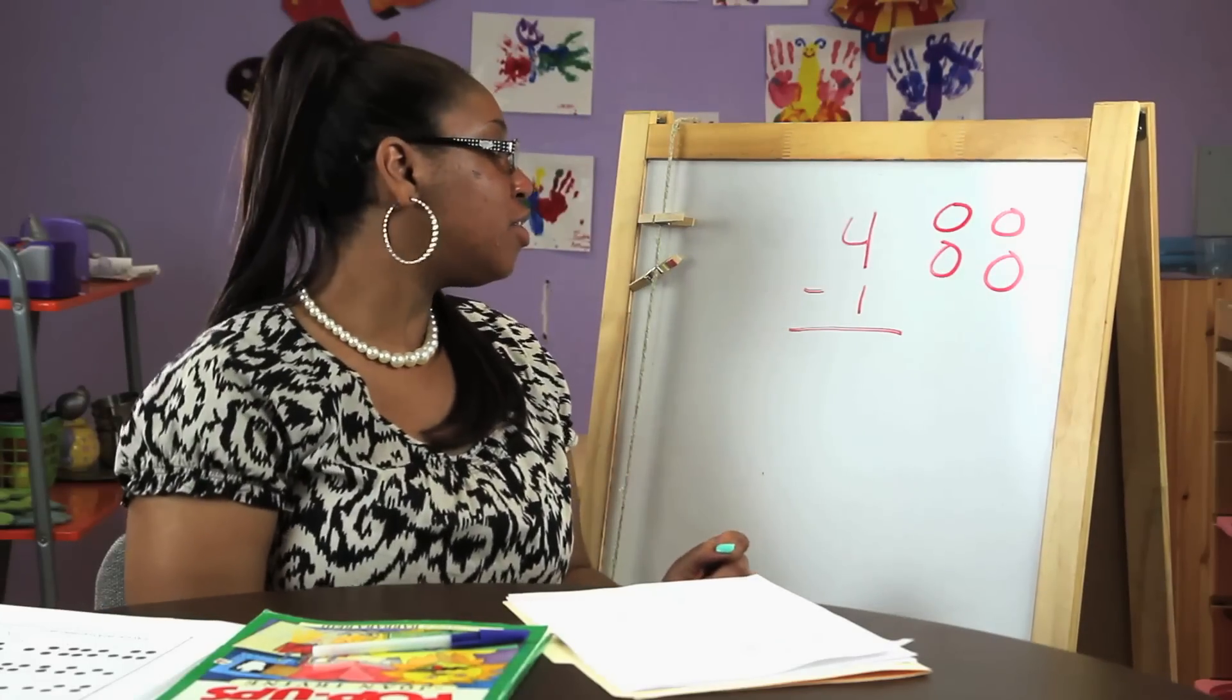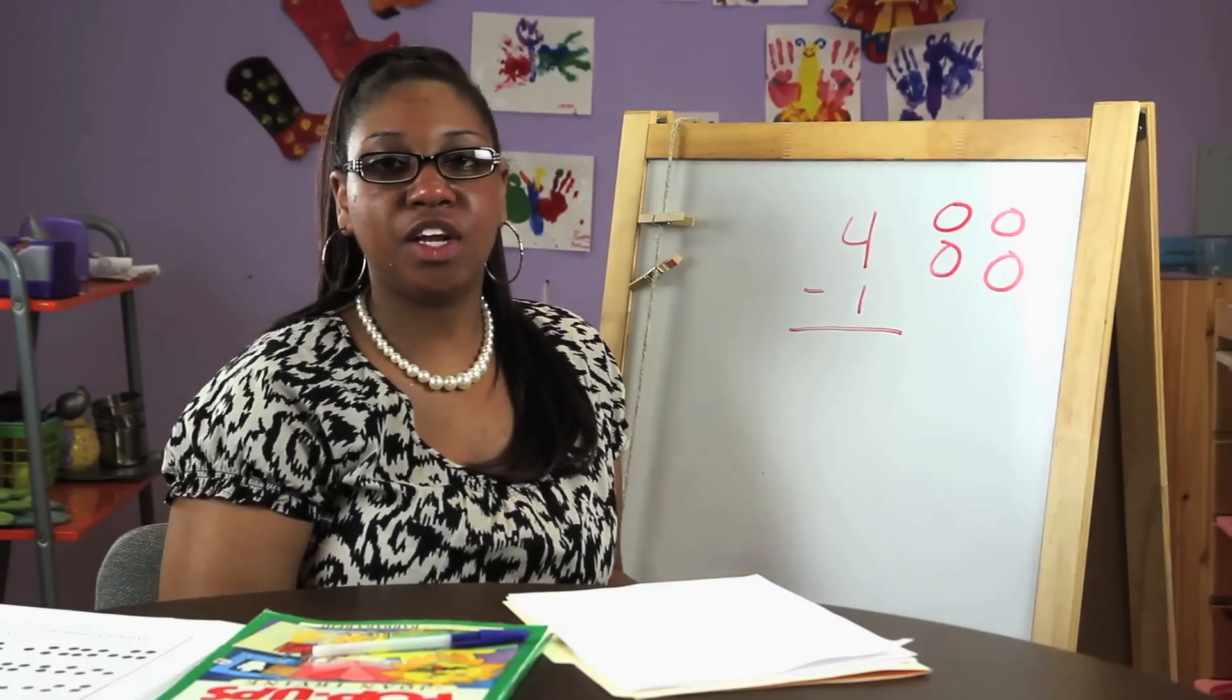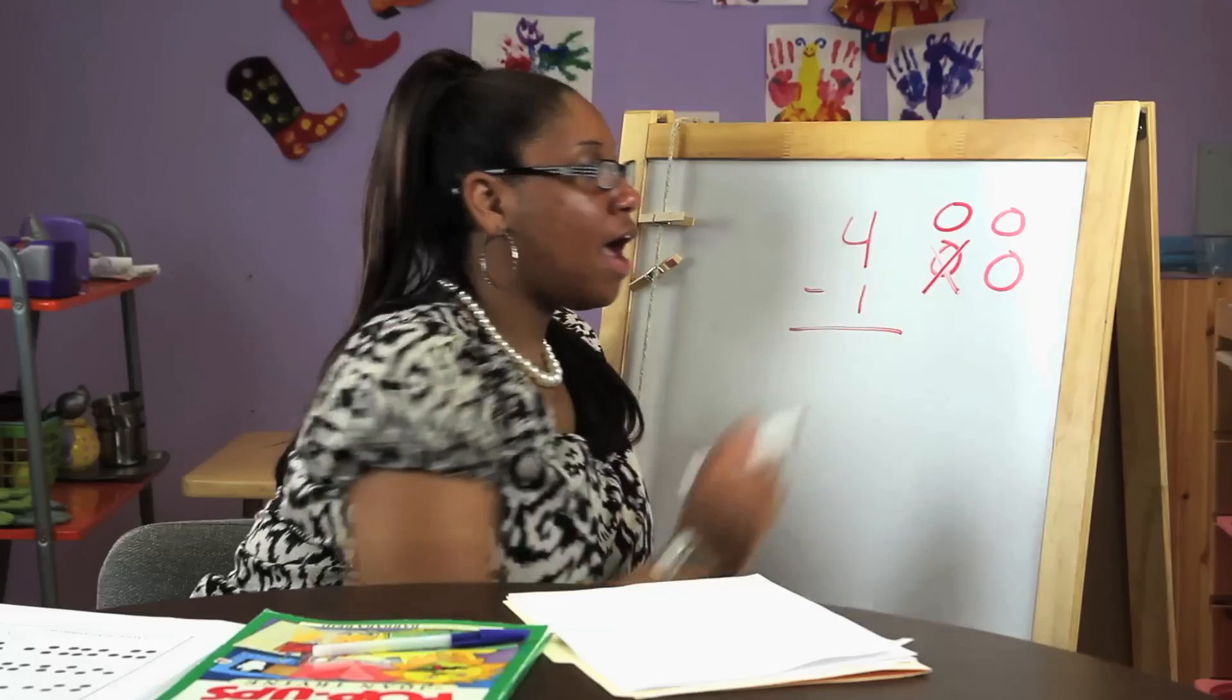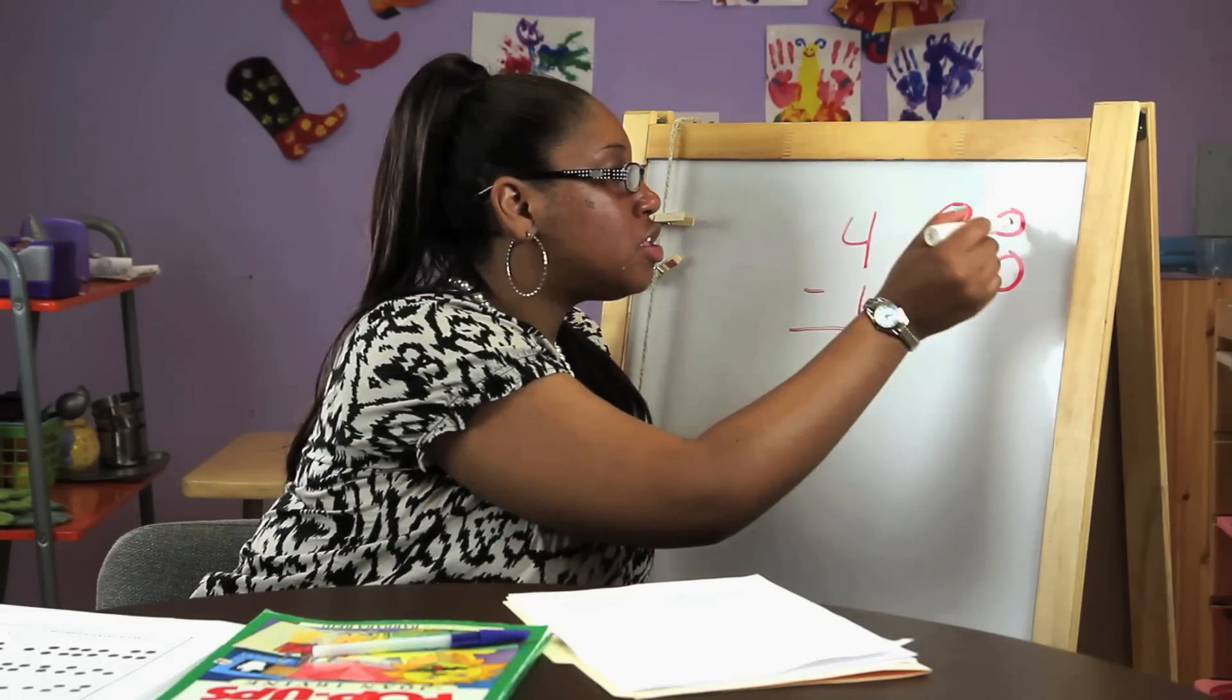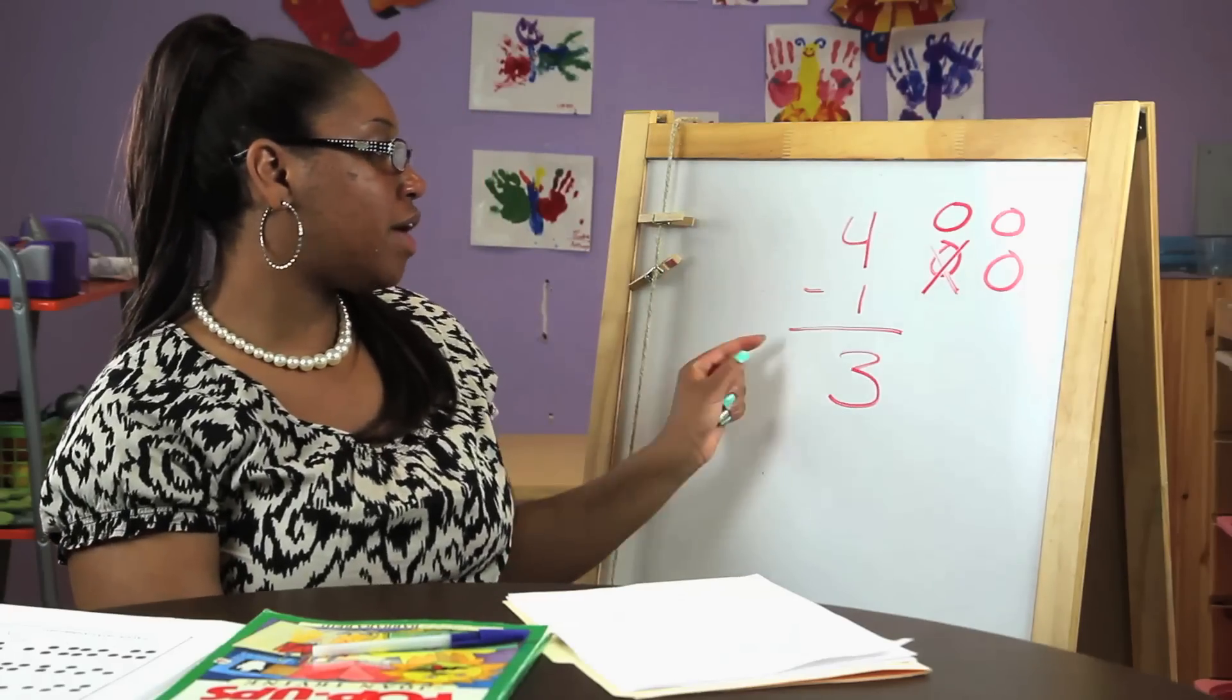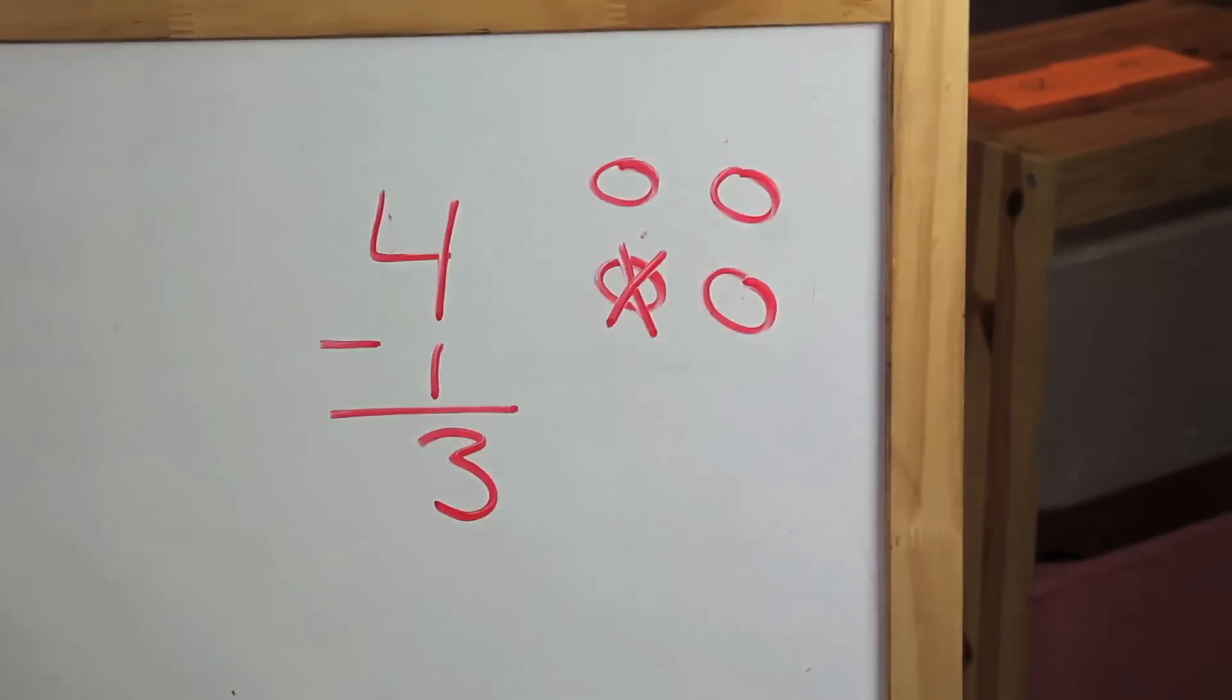I ask the student, how do we subtract four minus one? Wait for them to come up with different ideas and then show them. We have four circles. If we take one away, how many circles do we have left without the X? Count, one, two, three. Write three down and explain that four minus one equals three because we took one of the circles away and had three circles left.